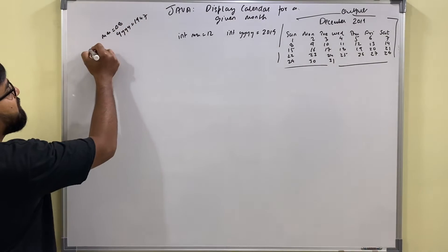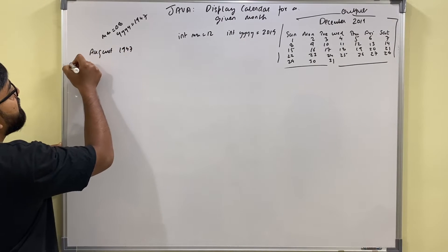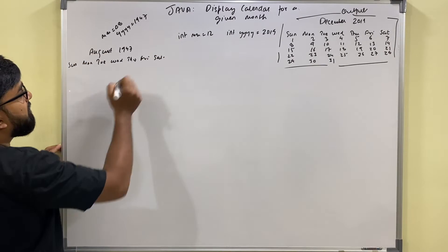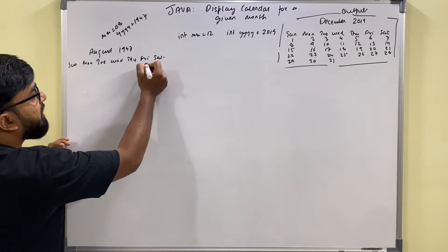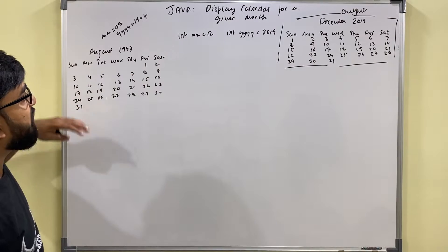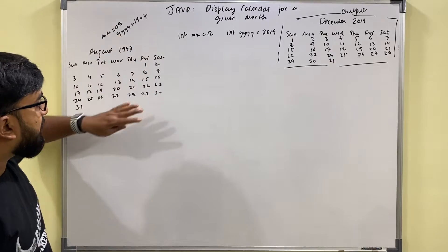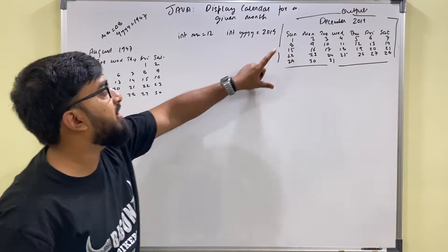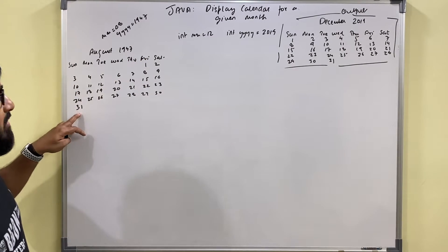This is how the calendar looked for August 1947. August 1947 had its first day on Friday, Saturday, Sunday, Monday, Tuesday. This is another example showing that the first day will not always be on Sunday — it might start from any other day, and then continues till the number of days in the month.